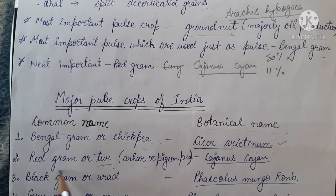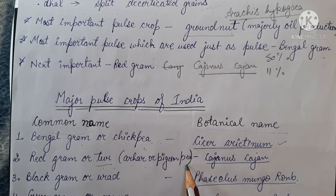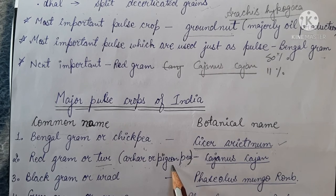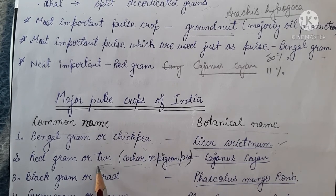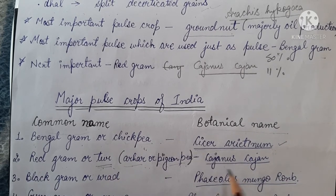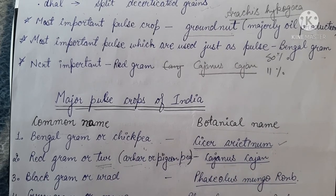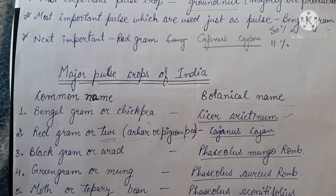The next one is red gram, also called toor ki daal or arhar ki daal, or pigeon pea — named so because it is loved by wild pigeons. Arhar is famous in the northern region and toor ki daal is famous in the southern region of the country. Its scientific name is Cajanus cajan. The next one is black gram, or udad ki daal, with scientific name Phaseolus mungo.